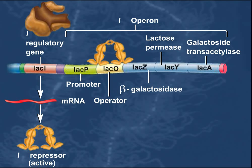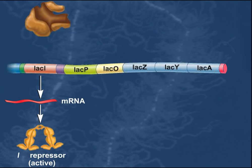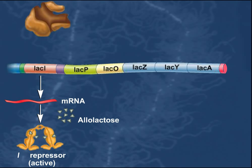When lactose enters the cell, a small amount of it is converted to allolactose via beta-galactosidase. Allolactose then binds to the LAC-Repressor.